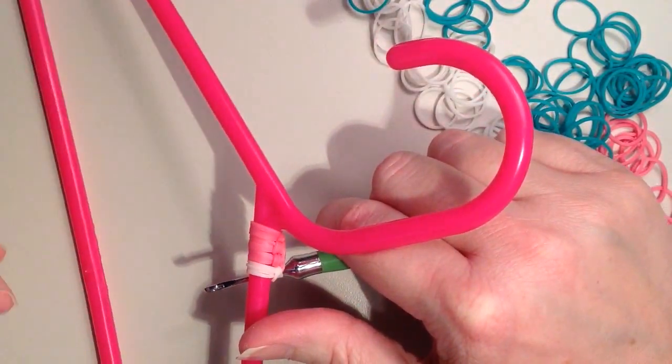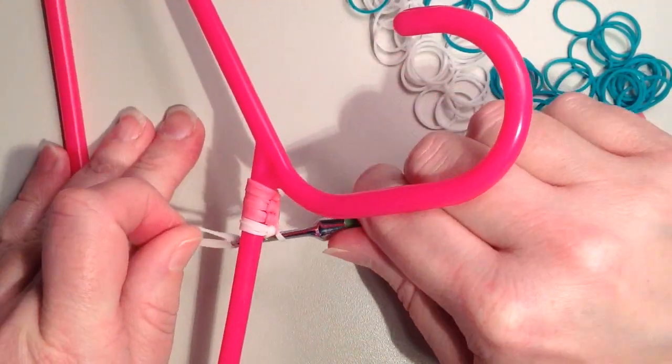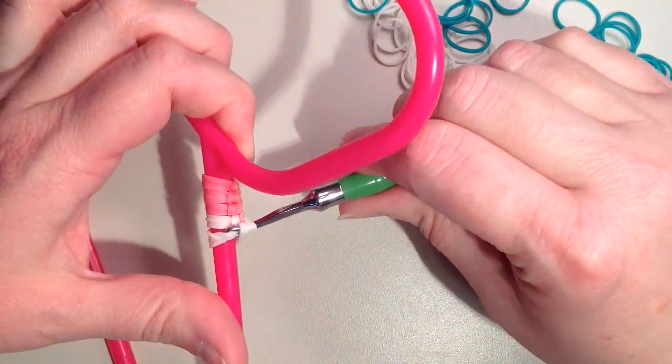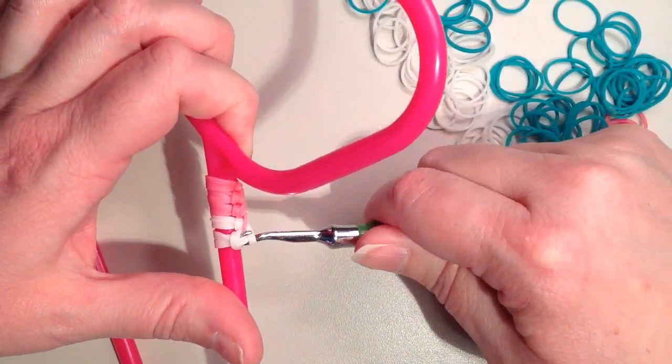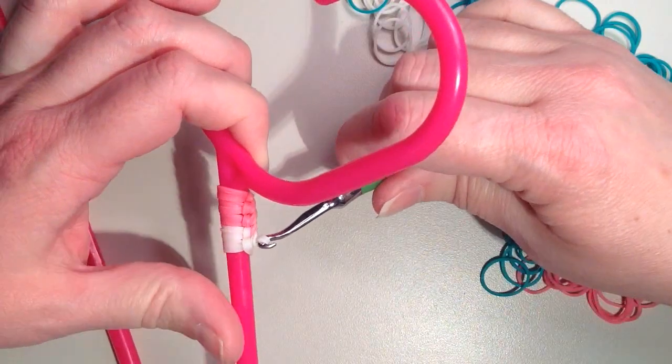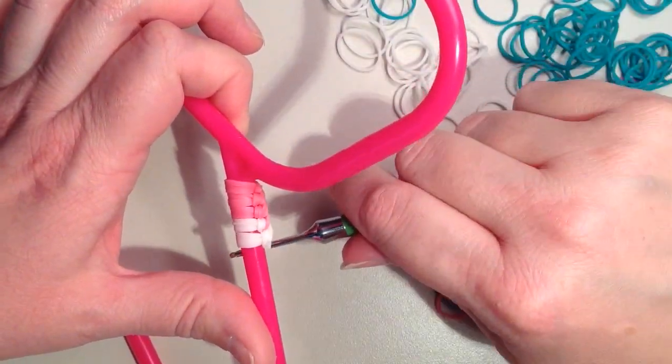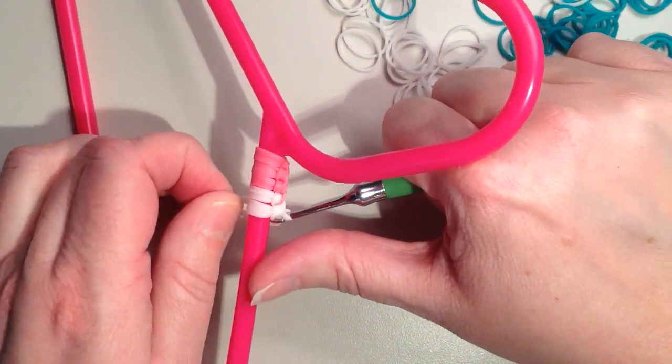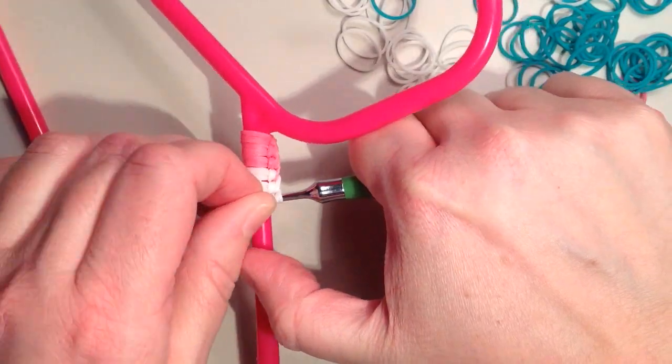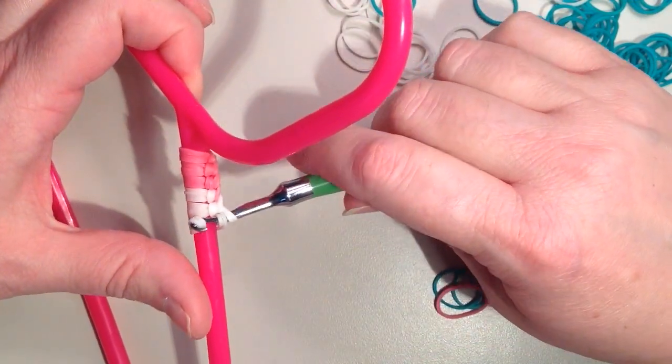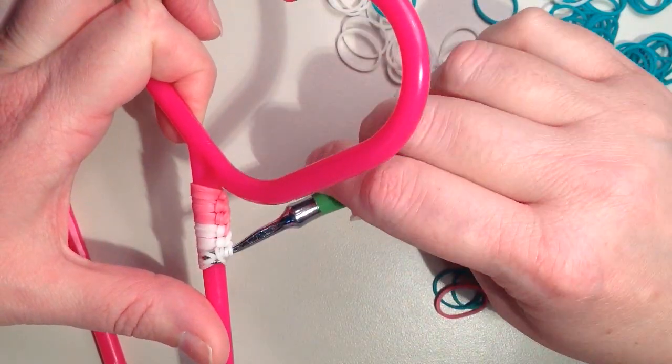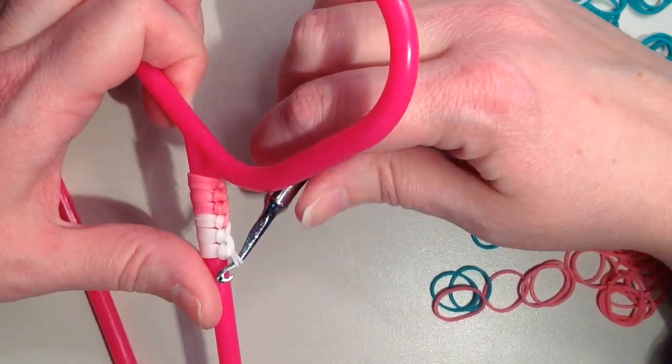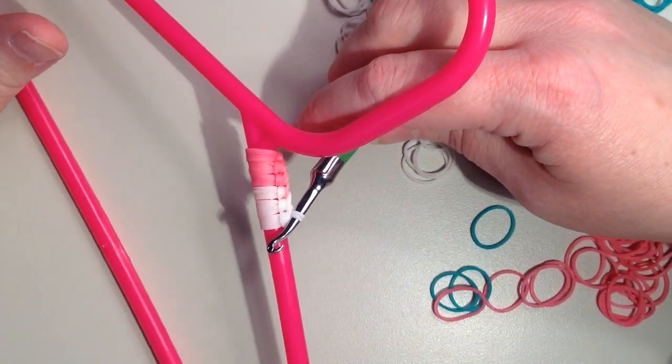I'm going to do that again, pulling it through the first two, and then the next two. And then I want one more set of white, so I'm getting my hook underneath. Getting through the first two, whoops, I only made it through one there. Twisting and going through the other two. And so now I've done three sets of white, so it's time to switch to the teal.